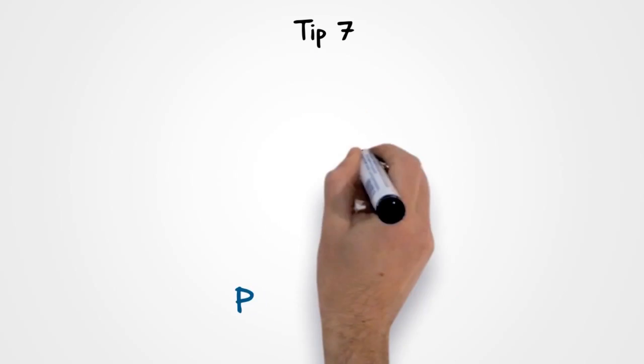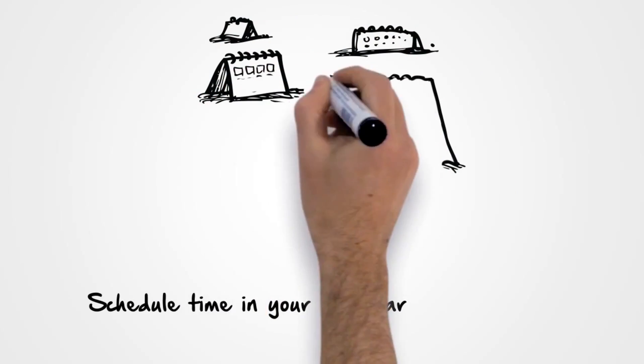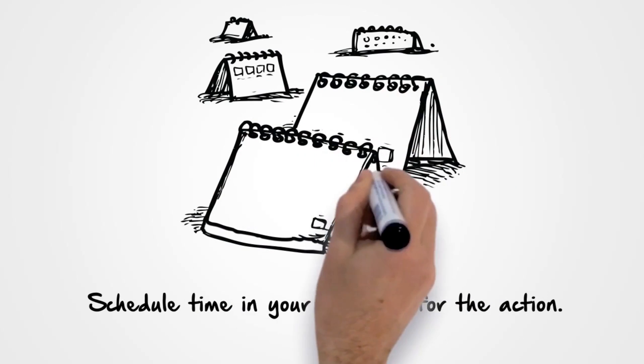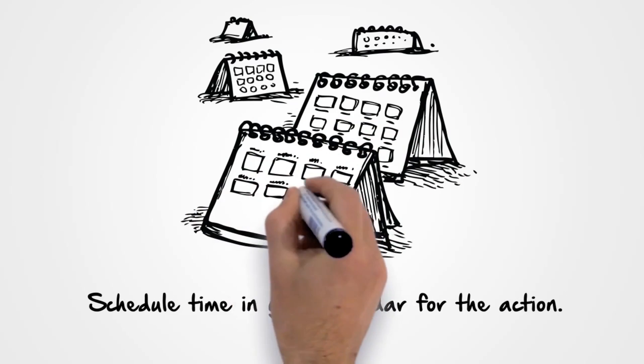Tip 7. Plan the action. Schedule time in your calendar for the action. Plan ahead on how to overcome any potential obstacles. Then have integrity and follow through on your plan.